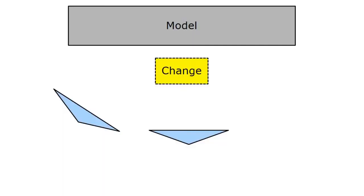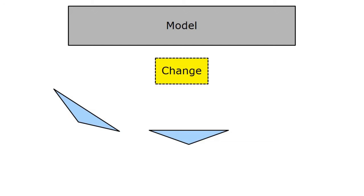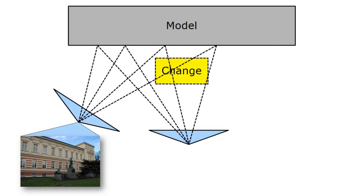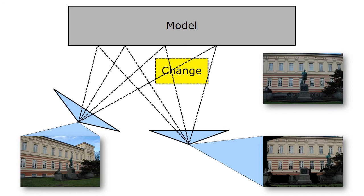To detect inconsistencies between the images and the model, we first back-project every pixel of an image onto the model, and then reproject them to the viewpoint at which another image has been taken. By comparing the newly obtained image to the one observed in reality, we can identify the possible regions of change. This process has ambiguities, which we solve by repeating it with neighboring images and combining the results.